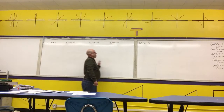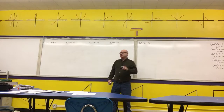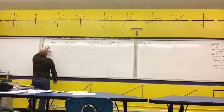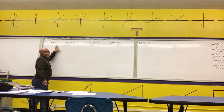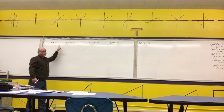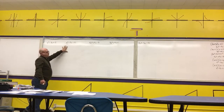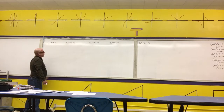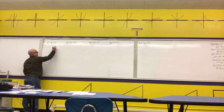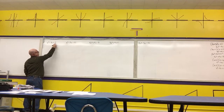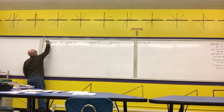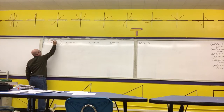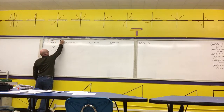Next, we're going to review factoring quadratics. Factoring quadratics in the form x squared plus bx plus c, where there's a 1 for the coefficient, these are the easiest ones. If they're factorable, we should be able to do it by inspection. The pattern is to find two numbers that multiply to the c term and add to the b term.